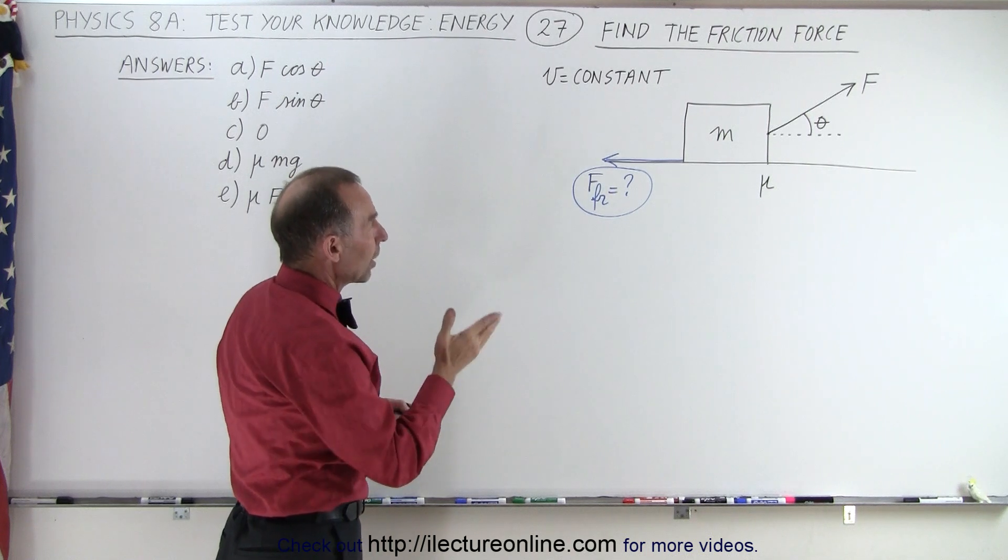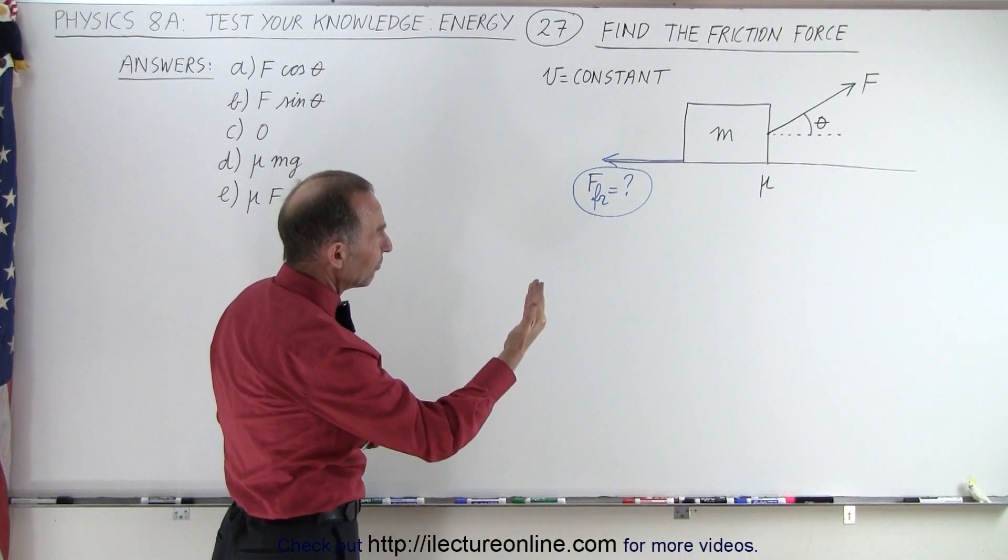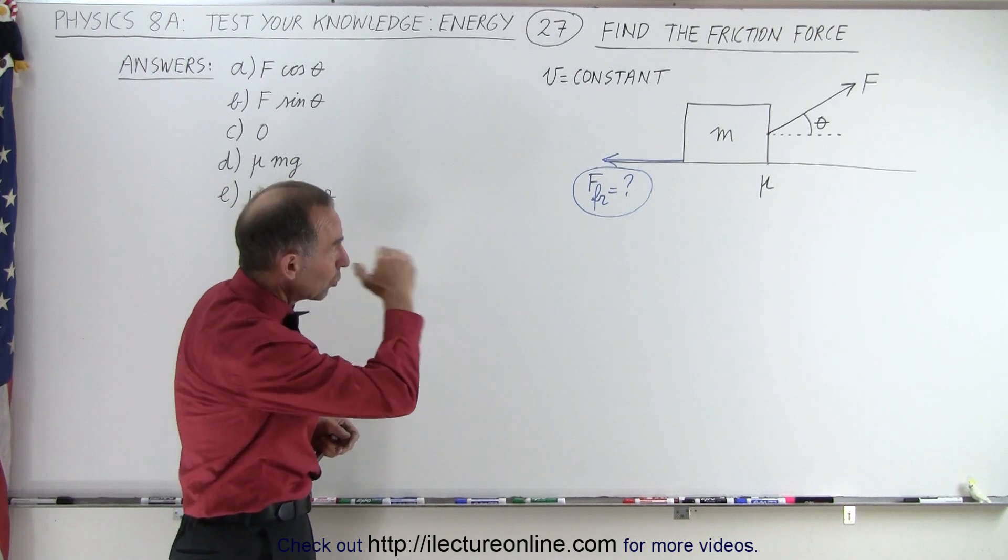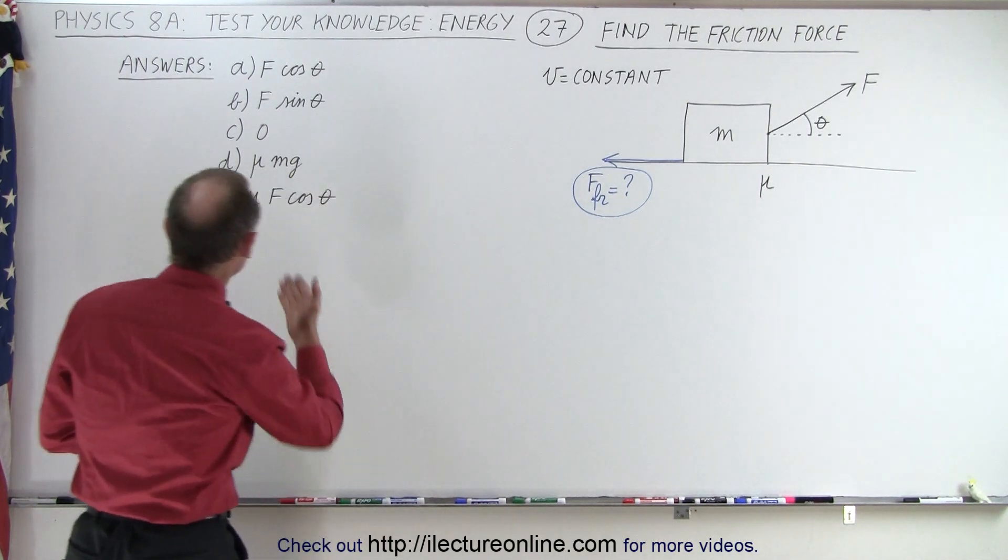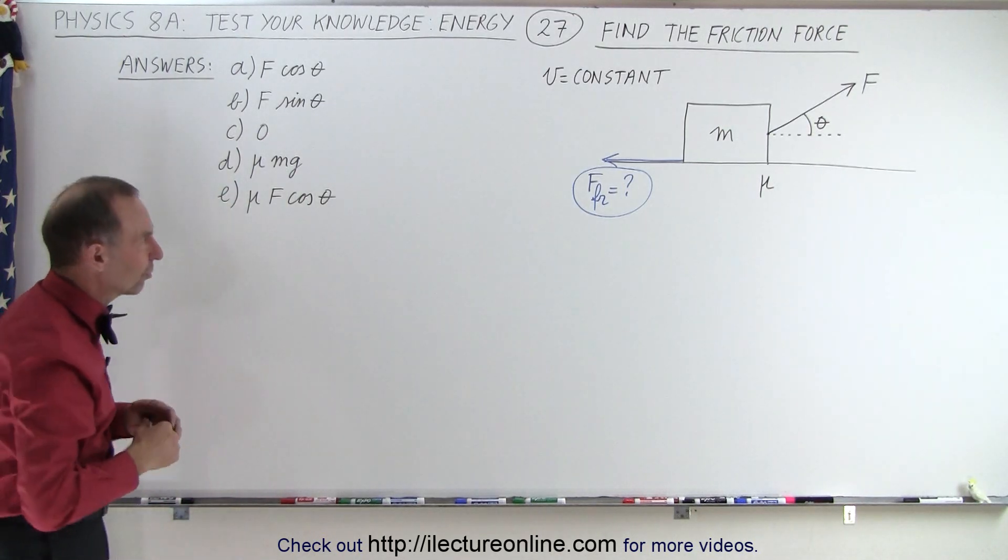We're pulling on the block at an angle theta with a force F. There's a coefficient of friction mu and the block slides across the floor at a constant velocity. We're given five answers. One of those must be the correct answer.